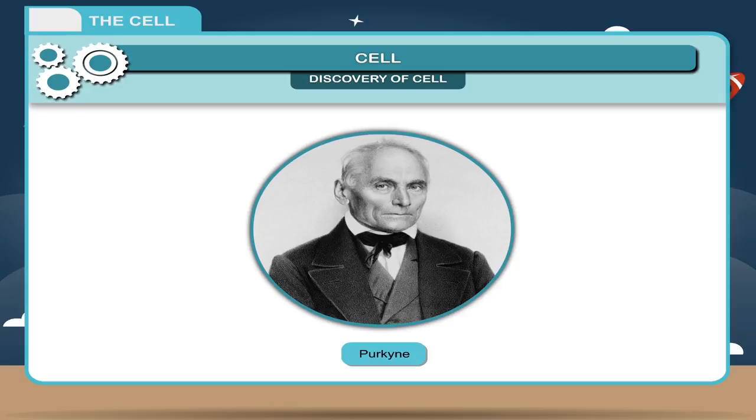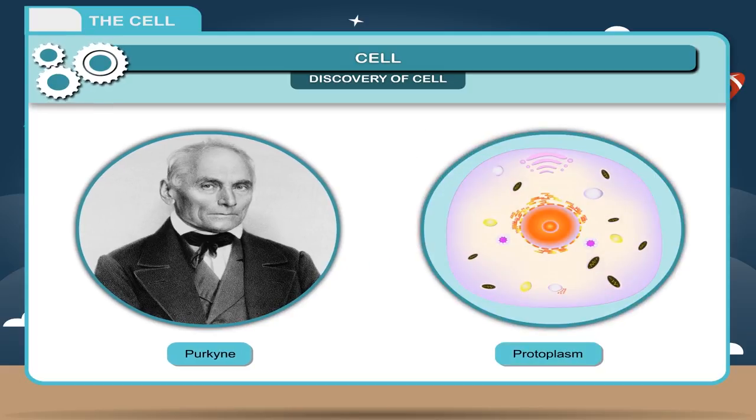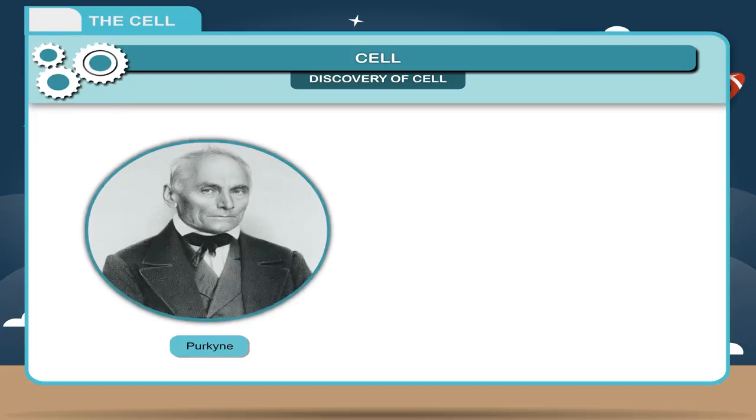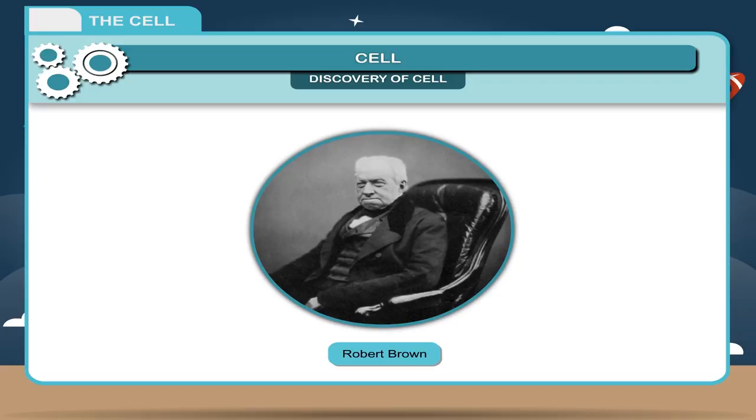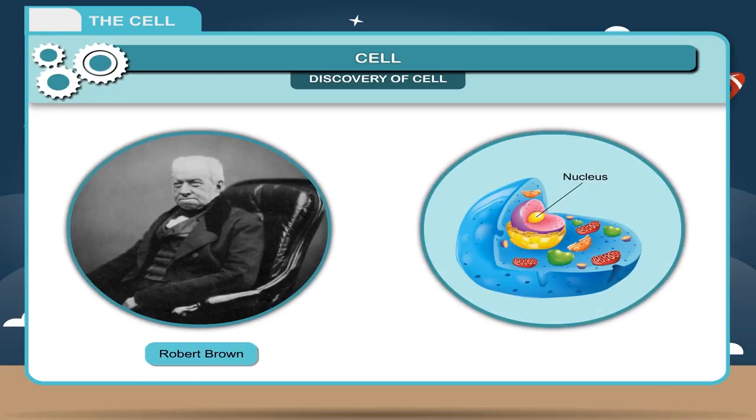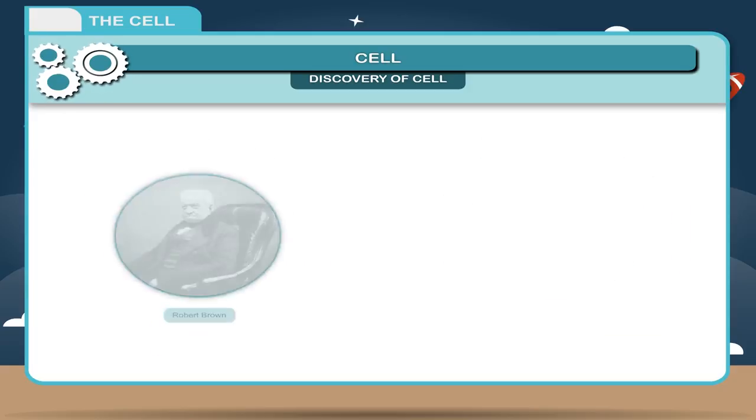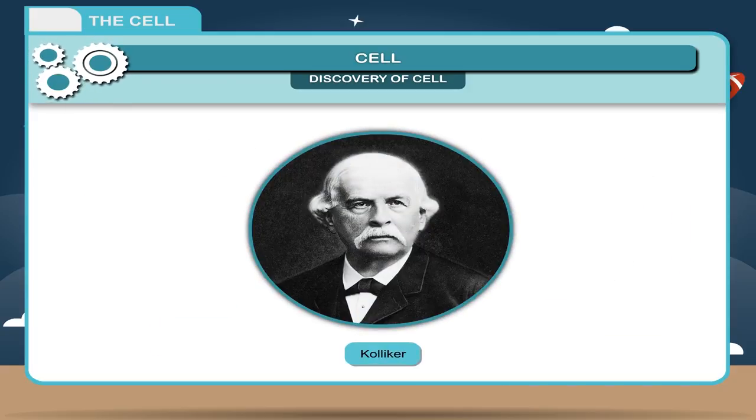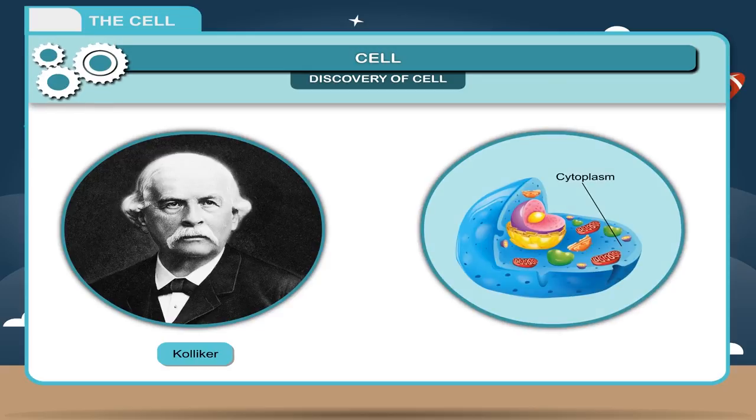Purkinje, 1839, first proposed the term protoplasm for the jelly-like living substance of the cell. Robert Brown, 1831, observed a spherical body in the cell called nucleus. Kolliker, 1862, proposed the term cytoplasm to the living material surrounding the nucleus.